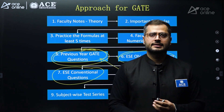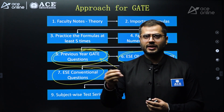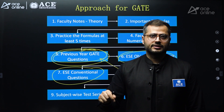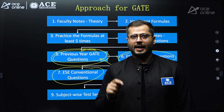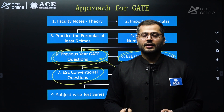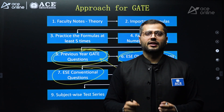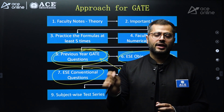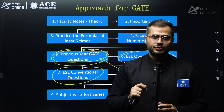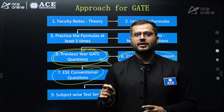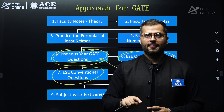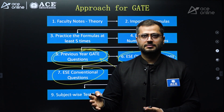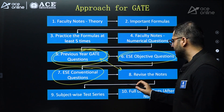Whether it's silly mistakes, conceptual mistakes, or lack of practice with the virtual scientific calculator in the GATE examination — all of this has to be covered in these three months through test series. Solve as many tests as you can. Test series is one of the best ways to approach any examination. From now on, 70% to 80% of your revision should be through new questions and test series. The remaining 20 to 30% should be through short notes or previous year questions.